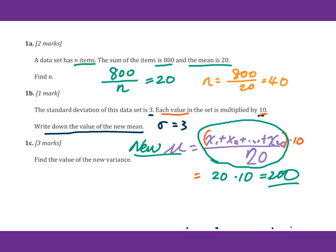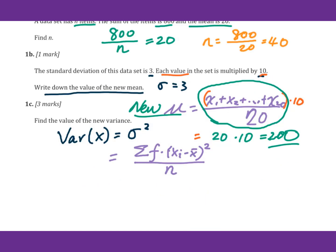Problem 1c: Find the value of the new variance. That equals sigma squared. For this sigma, that's f times xi minus x bar squared over n. First of all, let's talk about the new standard deviation.